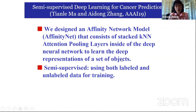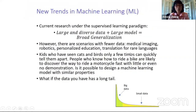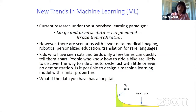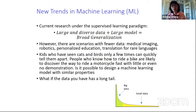Beyond that, I want to talk about more recent new trends in machine learning that excite me about how they can be applied to cancer prediction. Currently, research under the supervised learning paradigm uses large data and models to generalize for prediction. However, as I mentioned, you don't have that large a dataset to train this deep learning model.